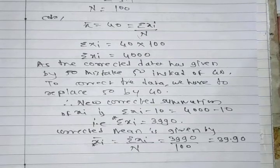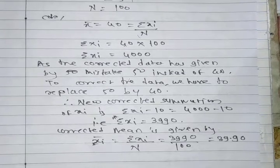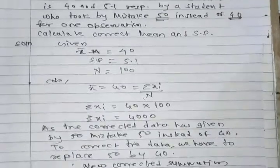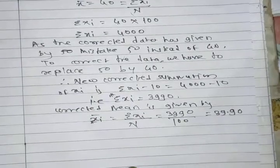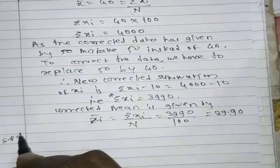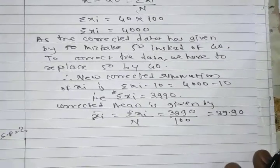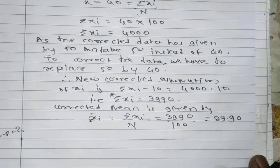Similarly, you can calculate the corrected standard deviation for the given distribution — this is assigned to you. The answer for standard deviation is 5. Today the Statistics chapter is finished; in the next lecture we will learn the next chapter, Mensuration. Thank you.